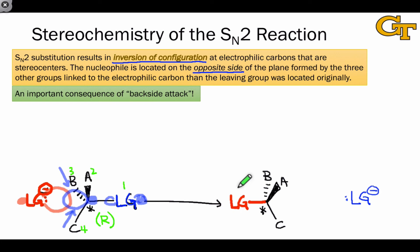In the products, the priorities are still the same. The leaving group is still one, A is two, B is three, and C is four. However, the configuration here is S rather than R. And I'll leave it up to you to verify that once again. Notice that this starting material and this product are enantiomers of each other as well.